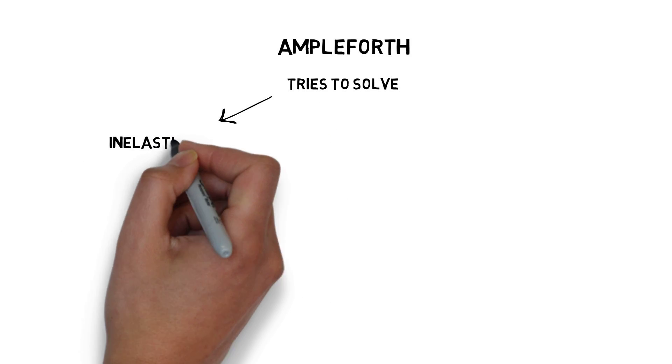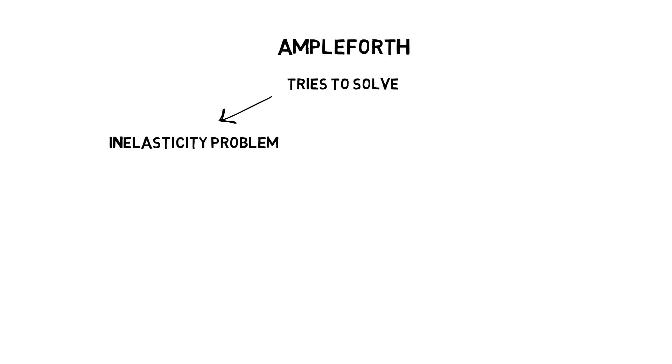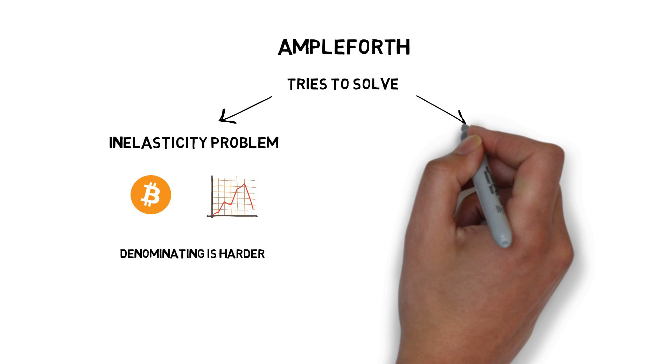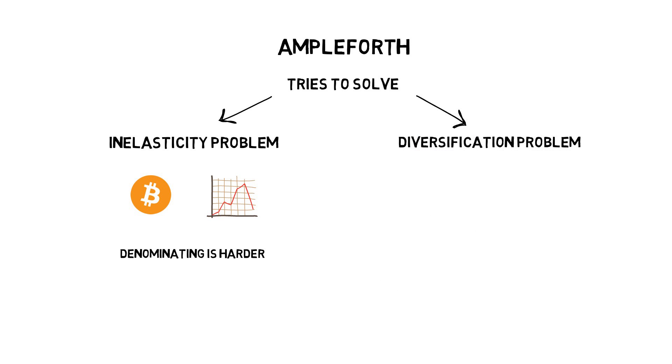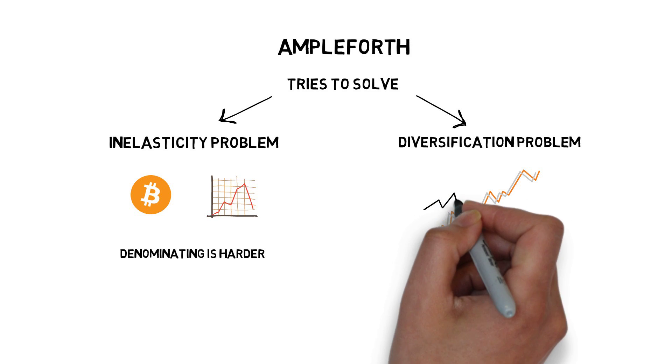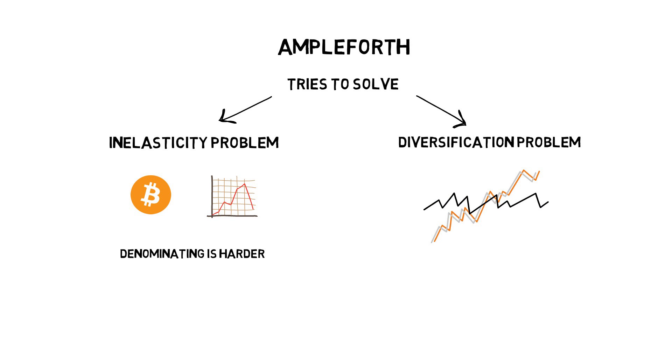Inelasticity problem: Fixed supply cryptocurrencies are vulnerable to sudden shocks in demand that make denominating things harder. Diversification problem: Today's cryptocurrencies are tightly correlated. Ample's unique incentives, in theory, allow it to decouple from Bitcoin's price pattern.